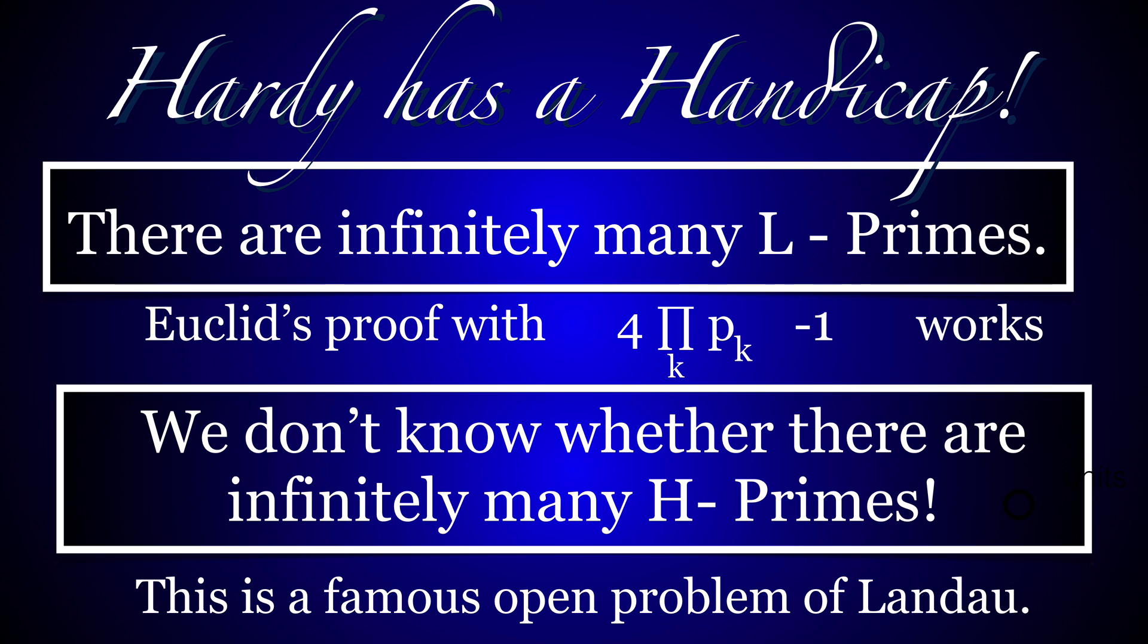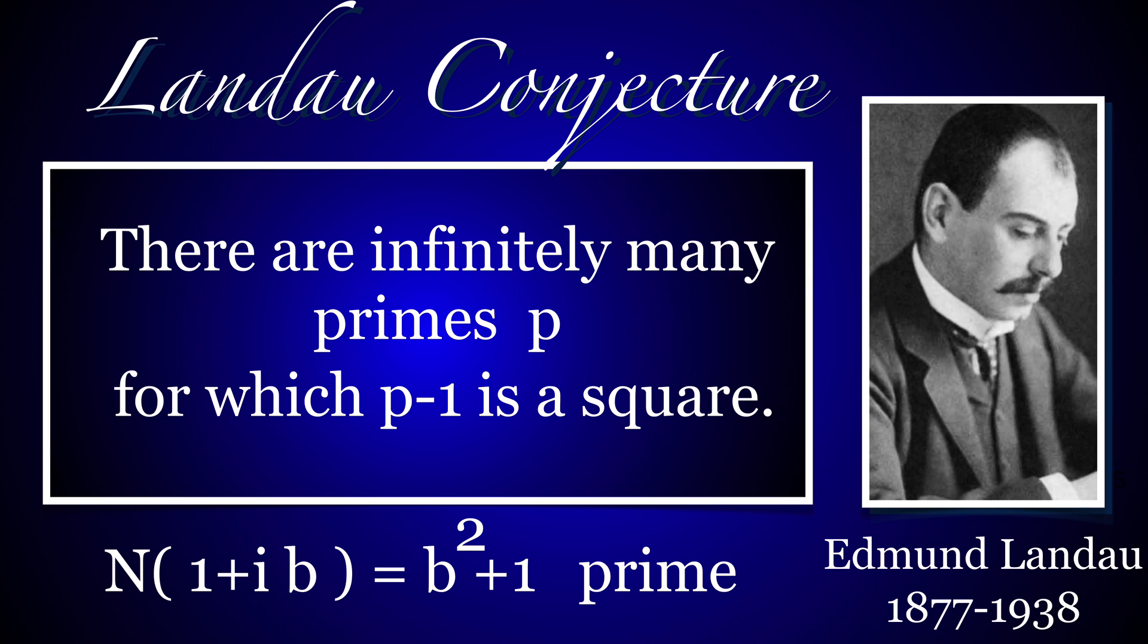What do we know about these two classes? Hardy-Littlewood experiments showed there are more Hardy primes and the fraction seems to converge. But we only know about Littlewood primes—we know there are infinitely many L primes. By the way, Euclid's proof by contradiction works: we assume there are only finitely many and form the number 4 times the product of the pk minus 1. But we don't know if there are infinitely many H primes. This is a famous open problem of Landau. One can rephrase it as: there are infinitely many primes p for which p-1 is a square, or infinitely many squares p² for which p²+1 is prime.